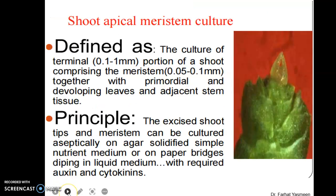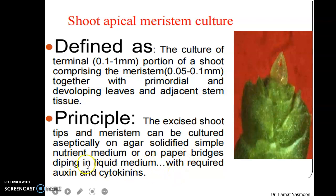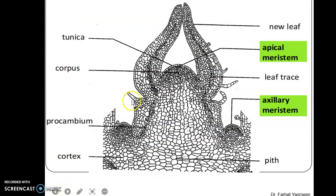Similar to root apical meristem culture, in shoot apical meristem culture the terminal portion of the shoot comprising the meristem together with primordial and developing leaves and adjacent stem tissue is used. The principle is that excised shoot tips and meristems can be cultured aseptically on agar-solidified simple nutrient medium or on a paper bridge dipping in liquid medium with required auxin and cytokinins.